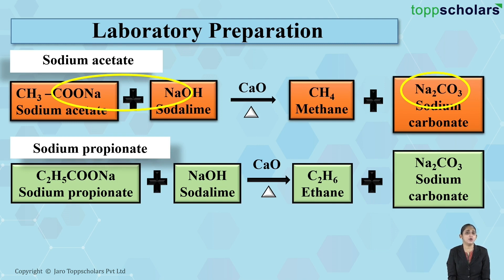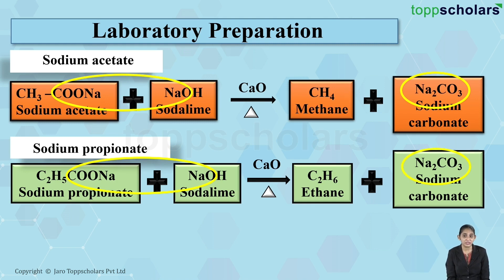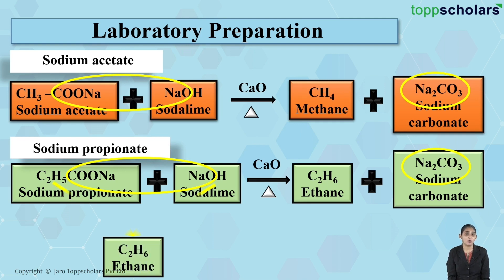Can you tell me from where does this ethane and sodium carbonate come from? What happens is COO⁻Na⁺ of sodium propionate and NaOH of sodium hydroxide combine to give sodium carbonate, that is Na₂CO₃. What is left behind is C₂H₅ of sodium propionate and H of sodium hydroxide, which come together to give you ethane, that is C₂H₆.